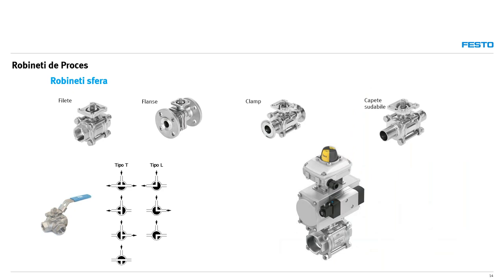Din punct de vedere al conexiunilor, există mai multe soluții cu filete, cu flanșe, clem, capete sudabile — soluția optimă se alege în funcție de necesitățile aplicației și ale industriei. Construcția robineților sfere permite realizarea mai multor funcții: robineții pot fi 2 pe 2, adică on-off, sau 3 pe 2, tip T sau L, chiar și cu 4 căi.